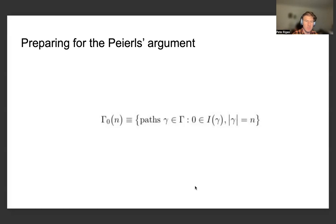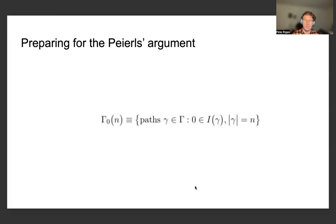To prepare for the Peierls argument, we define a set of contours given by the event Γ₀, which is defined as the set of paths γ such that zero belongs to the interior I(γ), and the total length or support of the path is of length n.